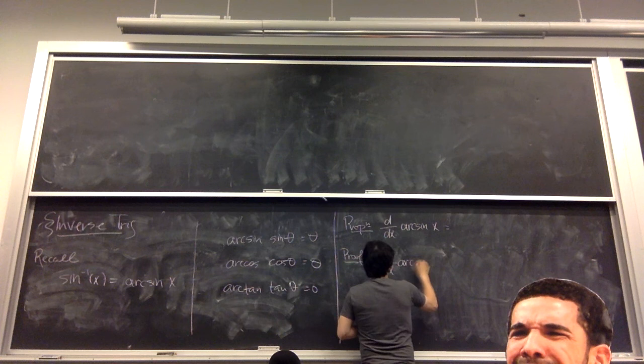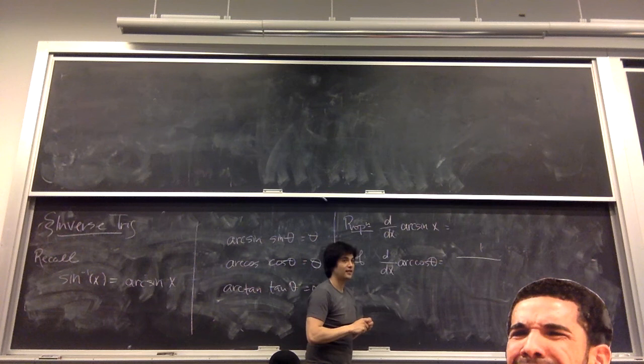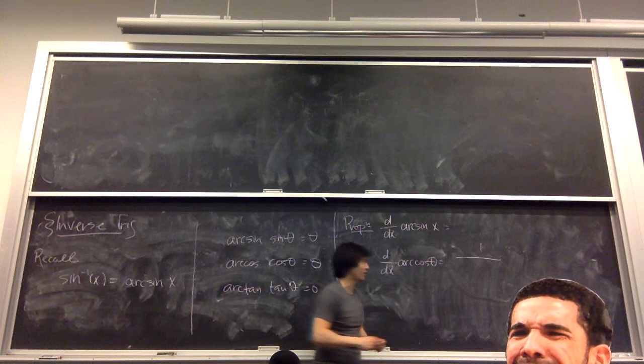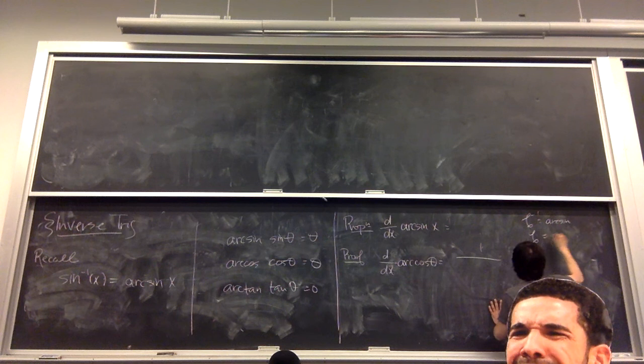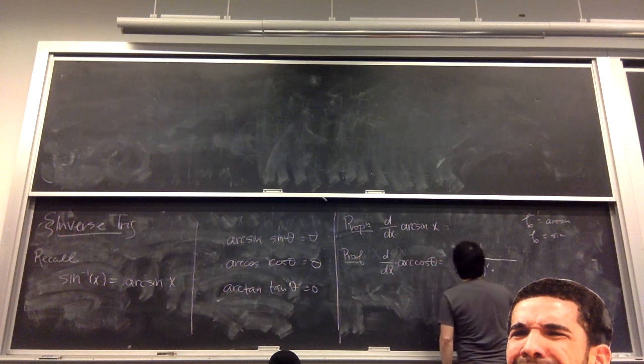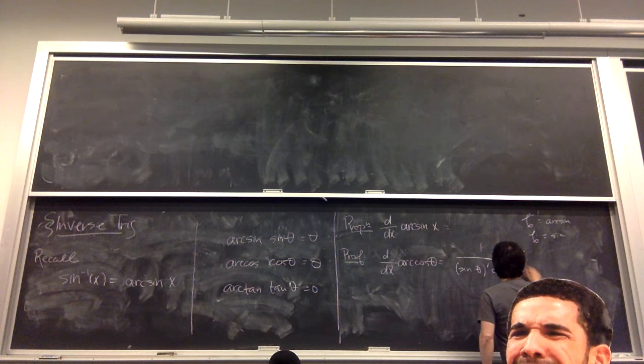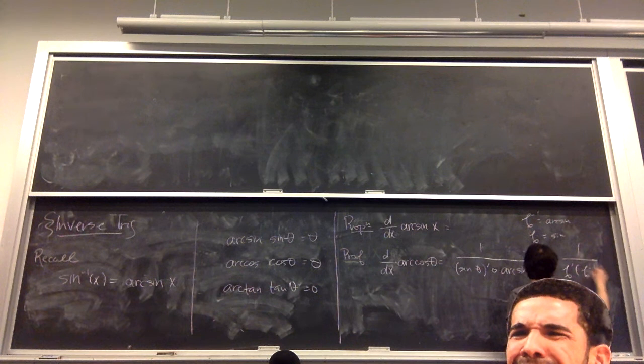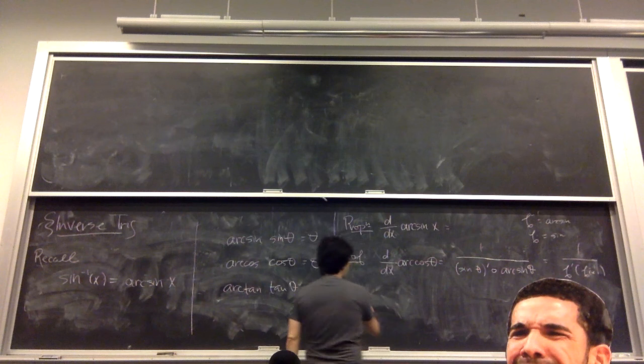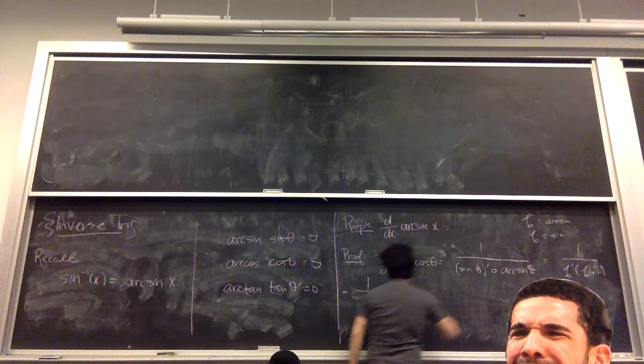1 over what? It's the derivative of the function, not the inverse function. If f inverse in this case is arc sine, then f is sine. So what we're going to get down here is the derivative of sine of theta, composite the inverse function itself, so arc sine of x. This is just 1 over f prime of f inverse x. That's the rule for taking derivatives of inverses. What is the derivative of sine theta? Cos of theta. So we get 1 over cos of arc sine of x.